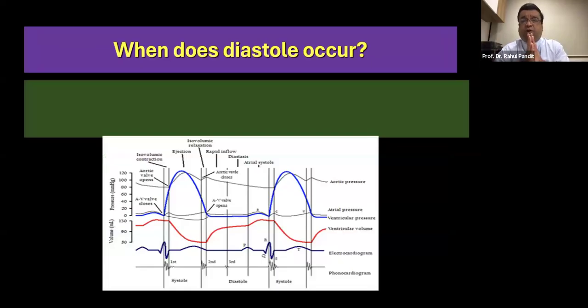Now, for us to understand diastolic dysfunction, obviously you need to understand when is the diastole happening. So, is it happening at any time? Of course not. It happens after every systole and before the next systole happens, we have a phase of diastole.